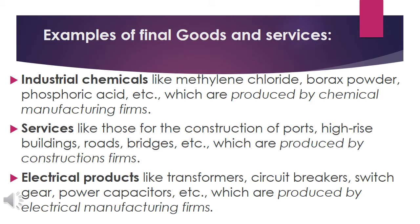Industrial chemicals are produced by chemical manufacturing firms. Next would be services like those for construction — ports, high-rise buildings, roads, bridges, etc. — which are produced by construction firms. Electrical products as well, like transformers, circuit breakers, switchgear, power capacitors, etc., produced by electrical manufacturing firms. You may share any final goods and services you have in mind in our discussion.